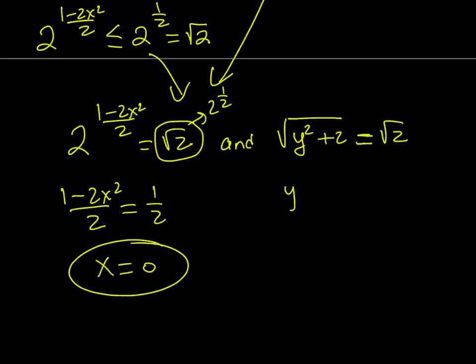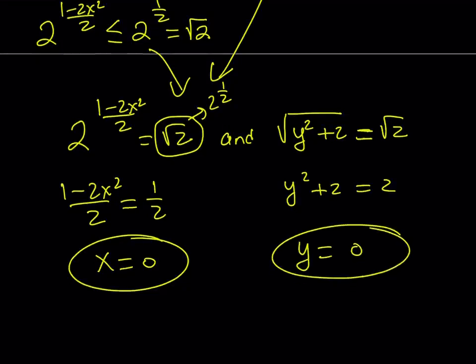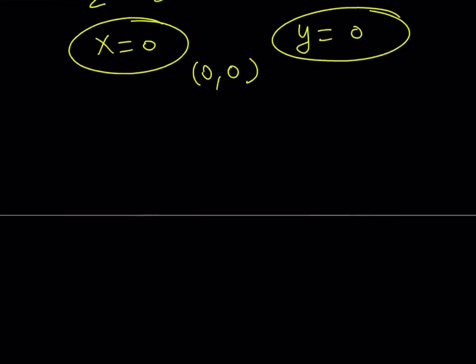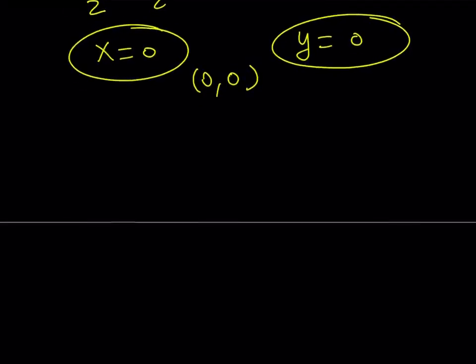And from the other one, we get y squared plus 2 equals 2. If you square both sides, we get y squared equals 0. And from here, we get y equals 0. Therefore, 0 comma 0 is going to be the only ordered pair that satisfies our equation. And this brings us to the end of this video.